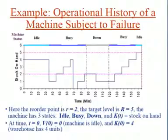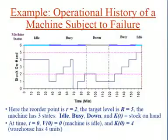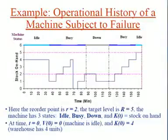If back orders were allowed, we would keep track of the back order size represented by the magnitude of the corresponding negative inventory. For example, if the customer asked for 8 units and we had only 4, we would record a negative inventory of 4.